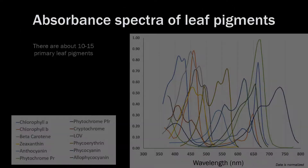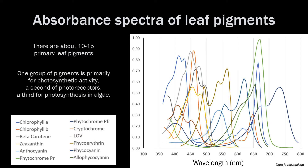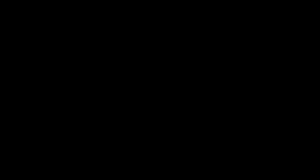In all, there are about 10 to 15 different leaf pigments, and these can be put into three groups: one primarily used for photosynthetic activity, a second for photomorphogenesis, and a third more used for the photosynthetic process inside algae. Let's focus in on that photosynthetic group of pigments.